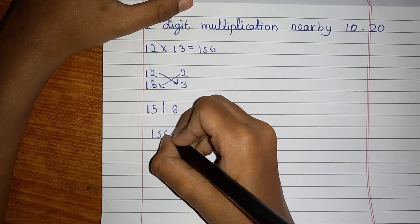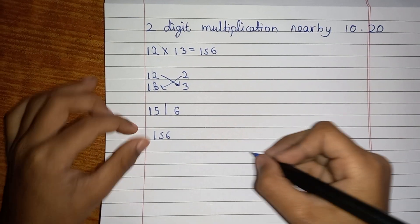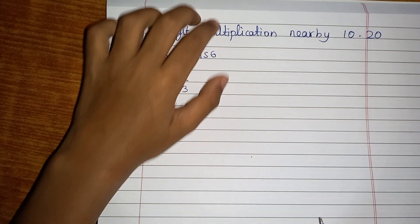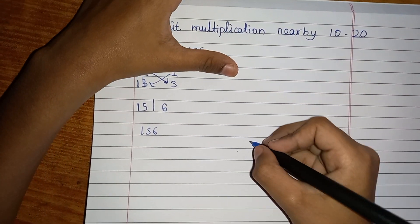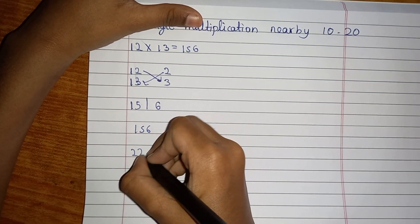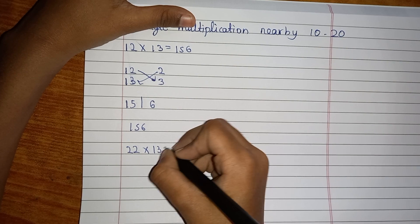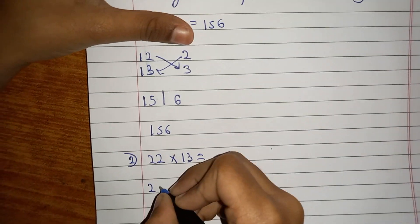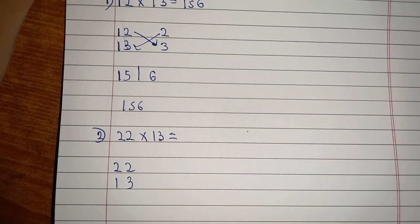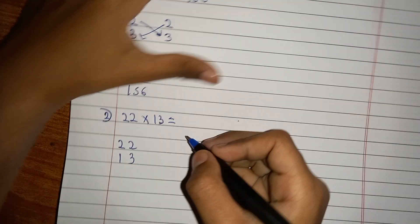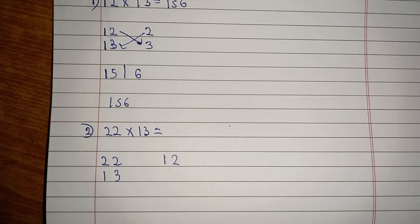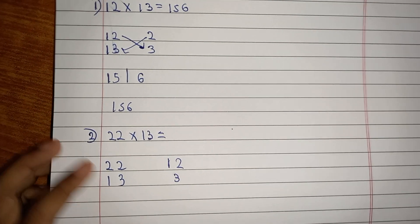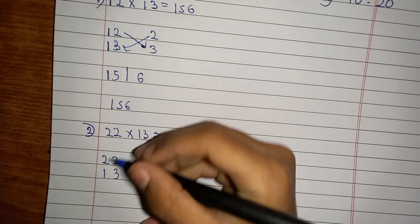Let's go with another one. Maybe 22 multiplied by 13. Let's see how we can do this. So I have to write 22 here and 13 here. Now 22 is 12 more than 10, so I have to write 12. Then 3 here because it's 3 more. So what we have to do now is add them.